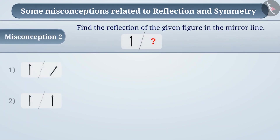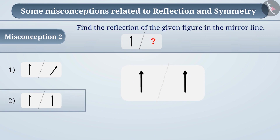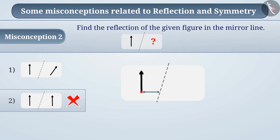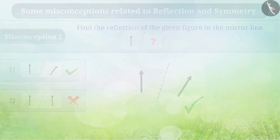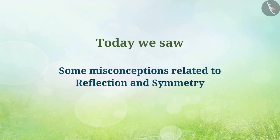Misconception 2: Find the reflection of the given image in the mirror line. Some students don't pay attention to the mirror line while finding the reflection — they ignore the mirror line and believe the reflection is given correctly in option 2. But option 2 is incorrect. Note that the tilted mirror line affects the tilted reflection, but the method of obtaining reflection is the same: we will find the distance of the arrow from the mirror line of the lower part and mark its reflection at that distance. Then, we will find the distance from the mirror line of the upper part and mark its reflection at the same distance. Now, we connect the two points — this will give us an accurate reflection of the figure. So here, the correct answer is option 1. Therefore, when you find the reflection, always keep in mind the mirror line. Today, we saw some misconceptions related to reflection and symmetry.